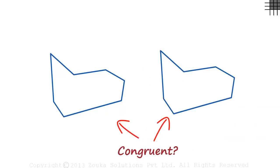Well, they look like each other. But the condition for congruency says that these two figures are congruent if one, when placed on the other, they both should overlap exactly.